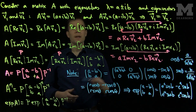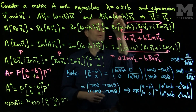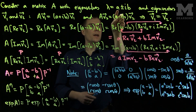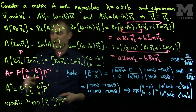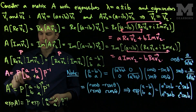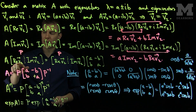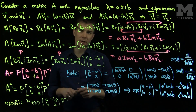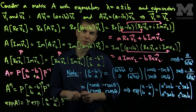In conclusion, if you have a matrix with complex eigenvalues, choose the eigenvalue of the form a-ib. Your decomposition will be A = P·[a, -b; b, a]·P⁻¹, where the matrix P is formed by taking the real part and the imaginary part of the eigenvector corresponding to a-ib. Thank you very much.